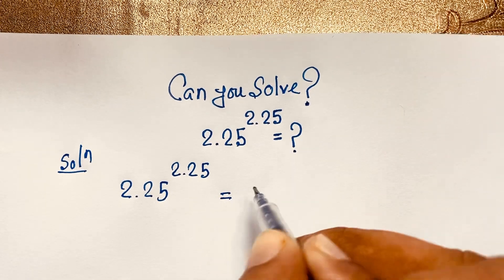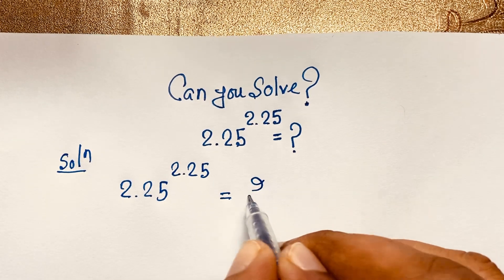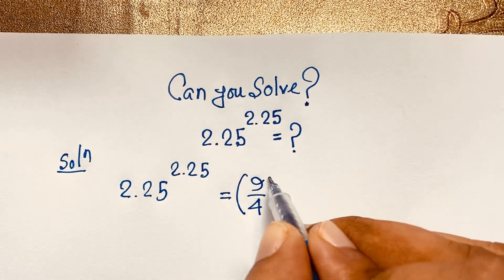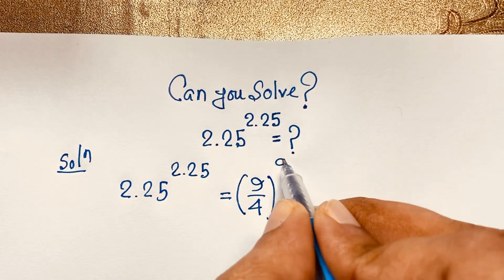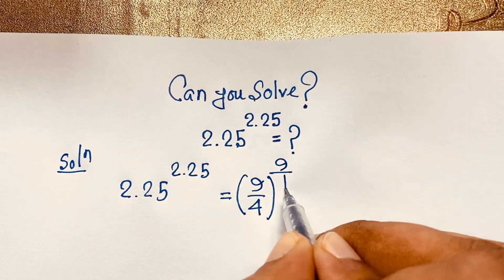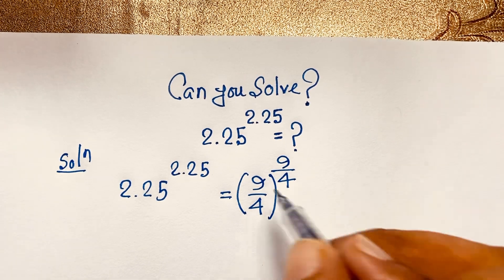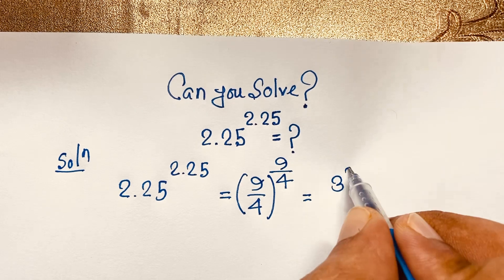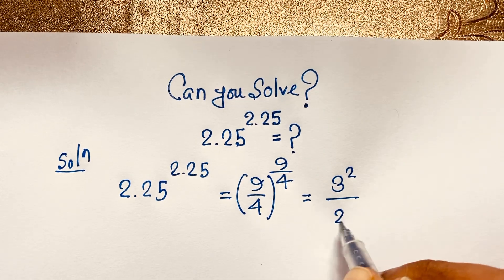First, we convert 2.25 to a fraction. 9 divided by 4 equals 2.25, so 2.25 is equal to 9 over 4. Now, 9 can be written as 3 to the power of 2, and 4 can be written as 2 to the power of 2.